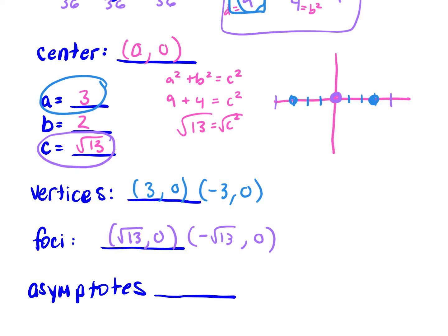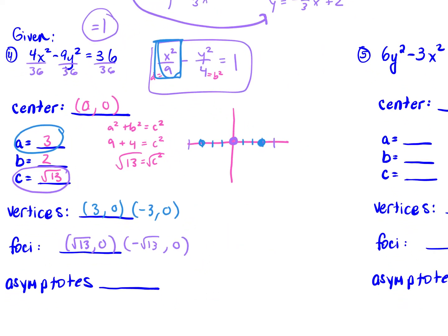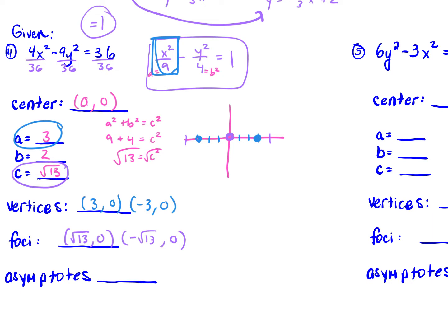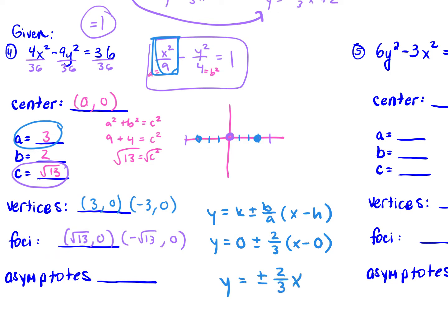For our asymptotes, since x squared comes first, we use b over a. So y equals k plus or minus b over a times x minus h: y equals 0 plus or minus 2 over 3 times x minus 0. This simplifies to y equals plus or minus two-thirds x.